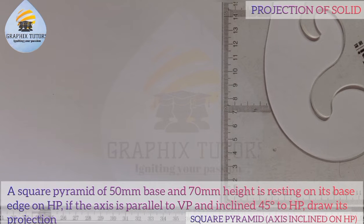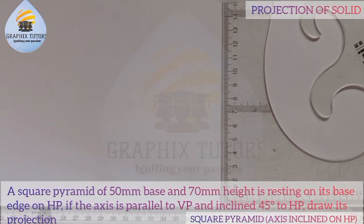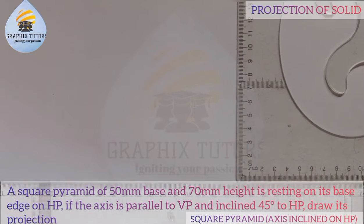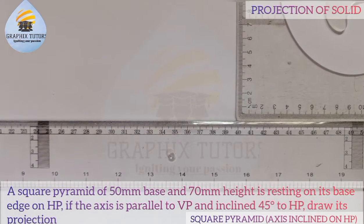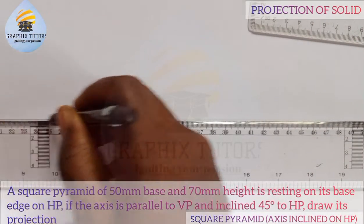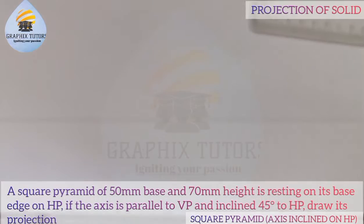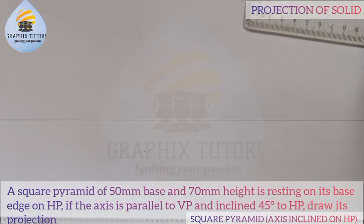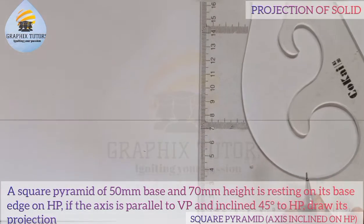Like I did in my previous video, let's first draw our HP and VP. HP means horizontal plane and VP means vertical plane. I'll take my pencil and draw the HP plane here and the VP plane here.